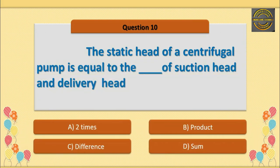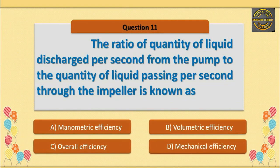Q10. The starting head of a centrifugal pump is equal to the — option D is correct — sum of suction head and delivery head. Q11. The ratio of quantity of liquid discharged per second from the pump to the quantity of liquid passing per second through the impeller is known as — option B is correct — volumetric efficiency.